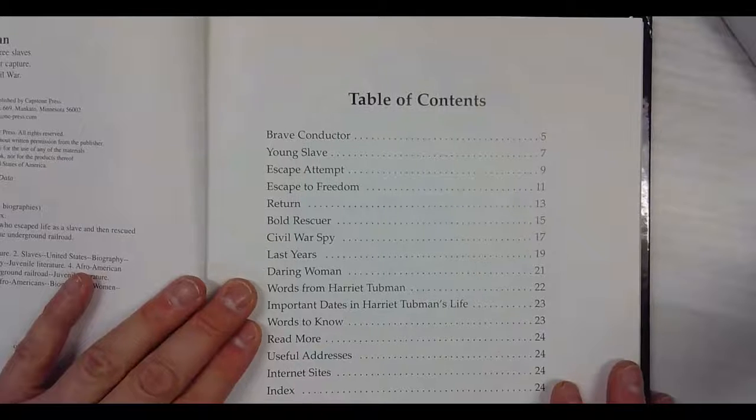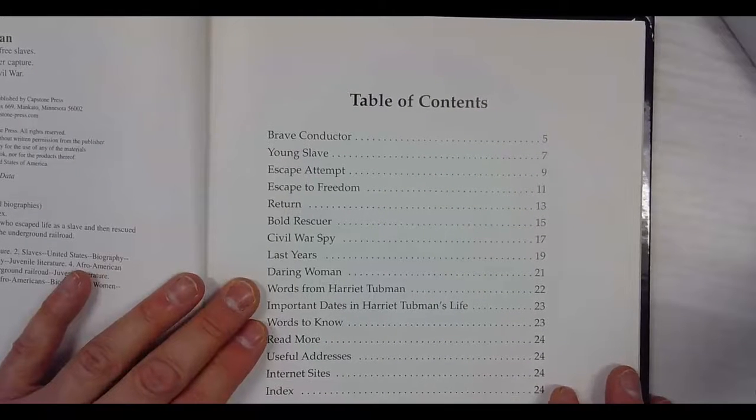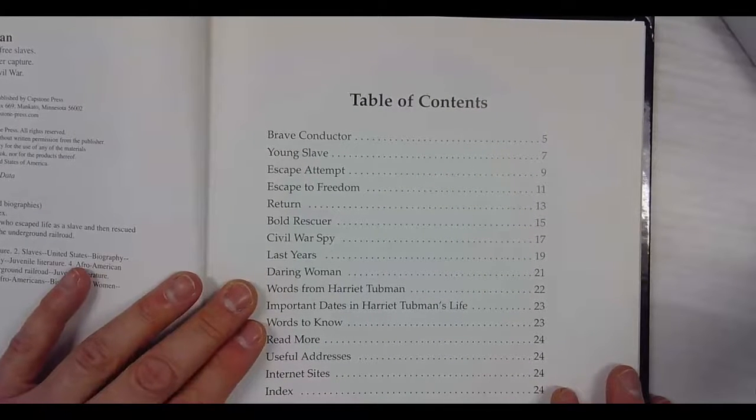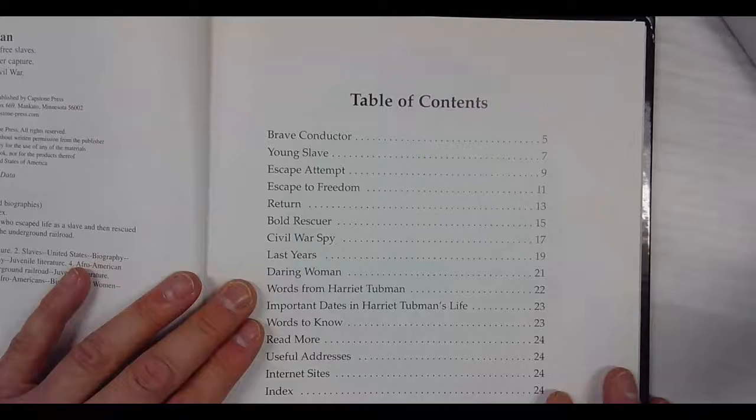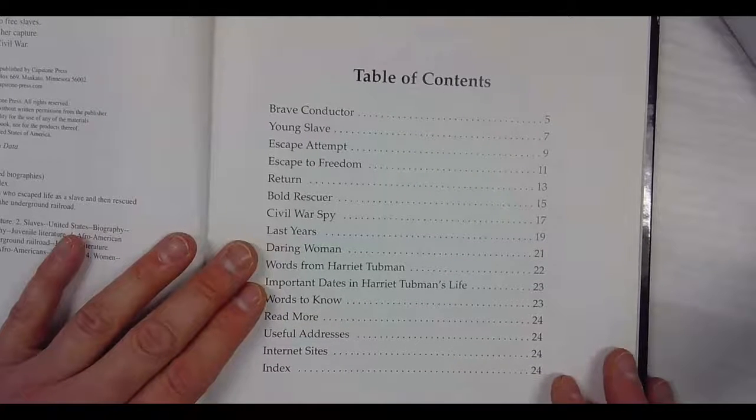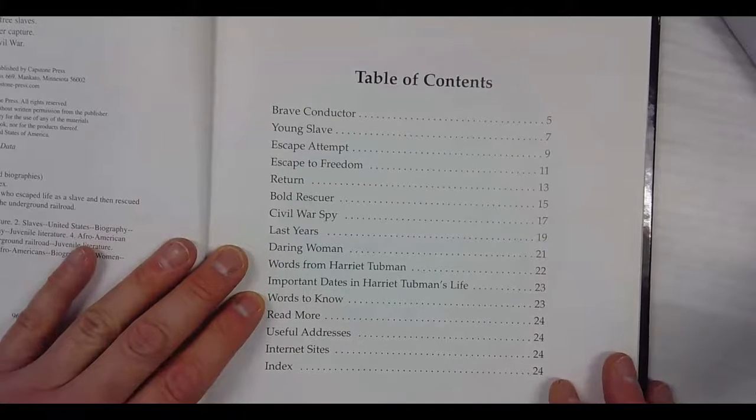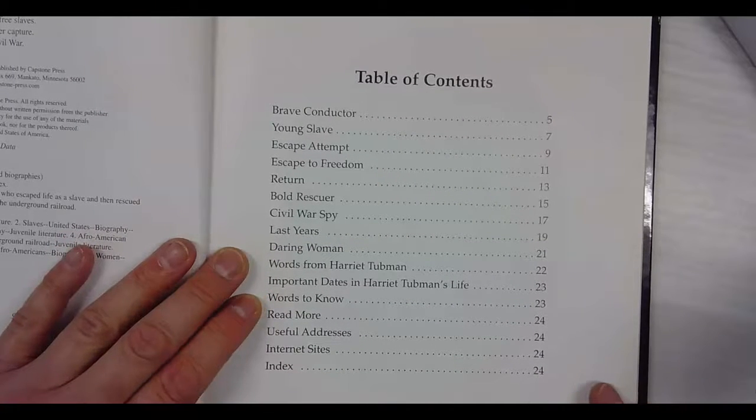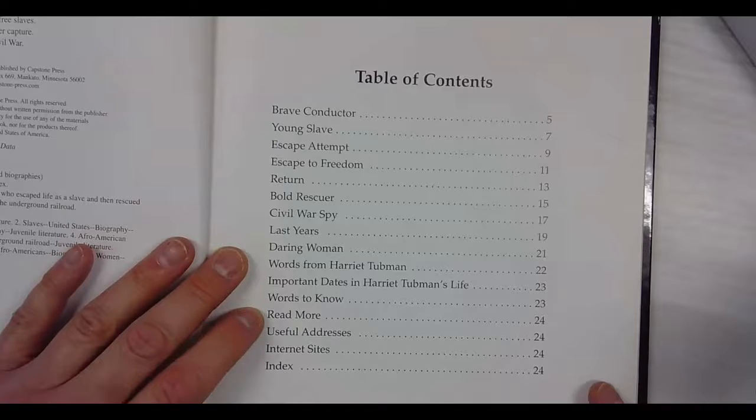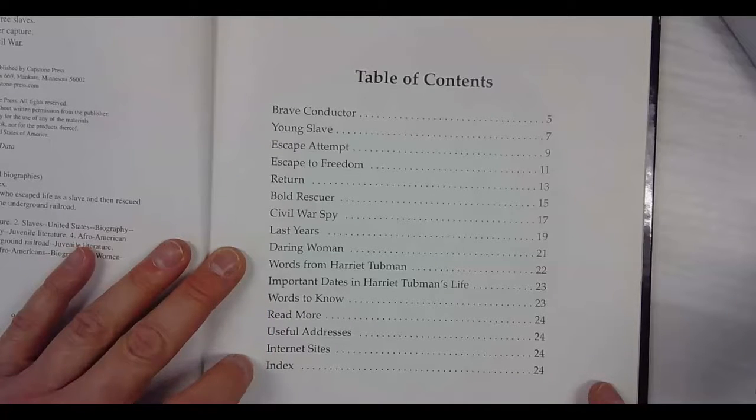These are the table of contents. Brave conductor, young slave, escape attempt, escape to freedom, return, bold rescuer, Civil War spy, last years, daring woman, words from Harriet Tubman, important dates in Harriet Tubman's life, words to know, read more, useful addresses, internet sites, and index.